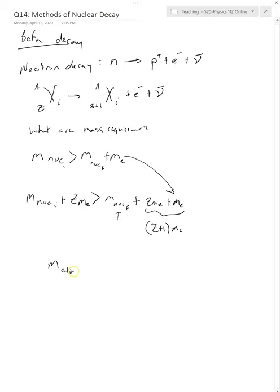The mass of the initial atom has to be greater than the mass final of the atom, and that's the whole thing. So this is for neutron decay.